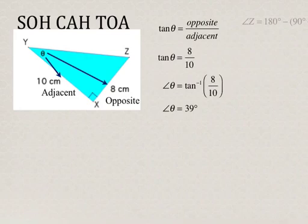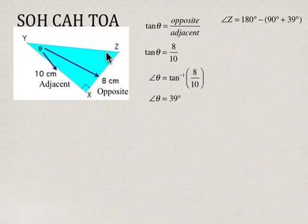Now we can figure out angle Z. Remember that the sum of the angles in a triangle is 180 degrees. So angle Z is going to be 180 degrees minus the sum of the other two angles, which would be 90 plus 39. Therefore, angle Z is 51 degrees.